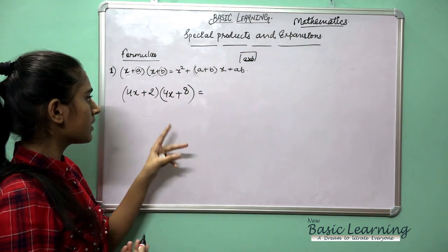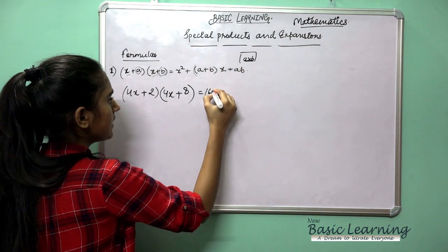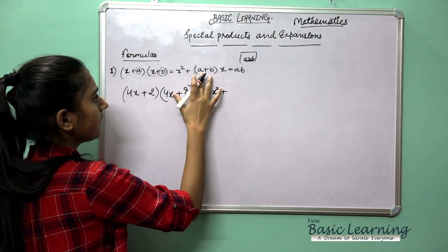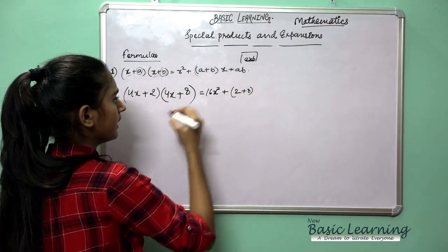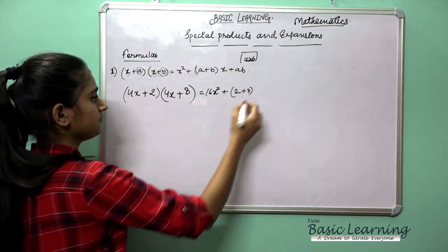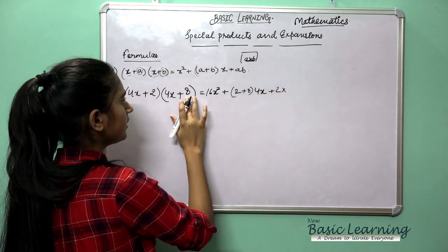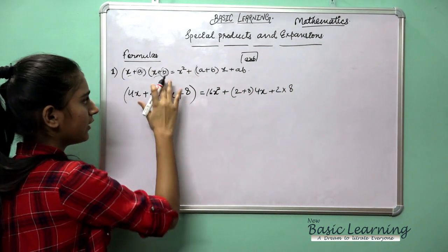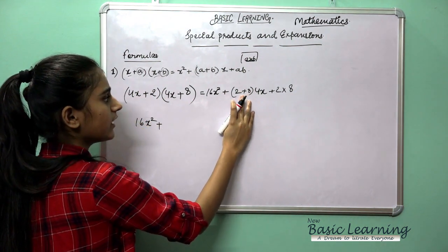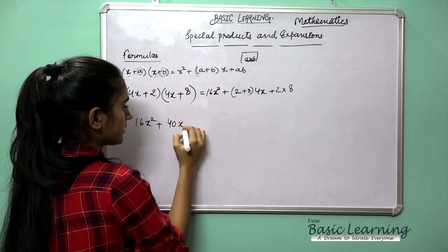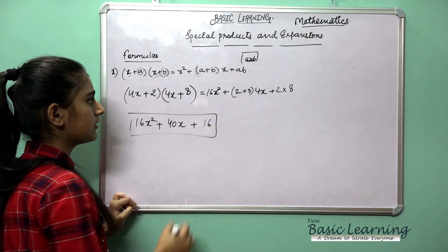Let's take an example. Suppose x is 4x, a is 2, and b is 8. Applying the formula: 4 times 4 gives 16, and x times x gives x square, so we get 16x square. Then a plus b is 2 plus 8 equals 10, and 10 times 4 gives 40, so we have 40x. Finally a times b is 2 times 8 equals 16.